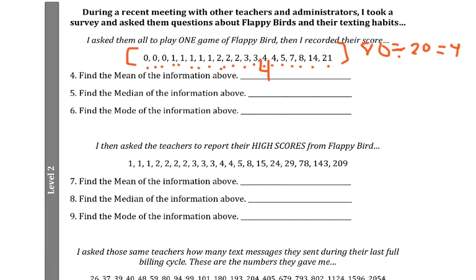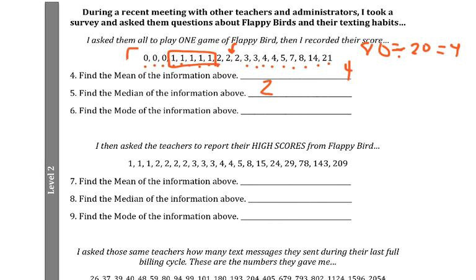Alright, to find the median we need to find the middle number. We want to find the middle number, and the median is between these two middle numbers — the number in between 2 and 2 would just be 2. And the mode for these numbers — the most common number, I think — is 1. So the mode is 1.